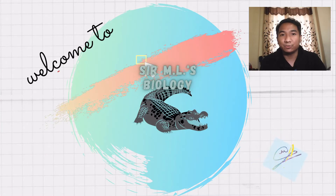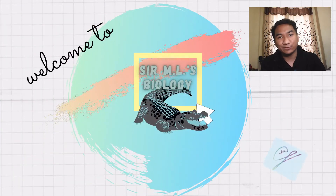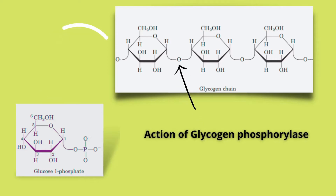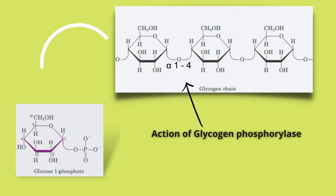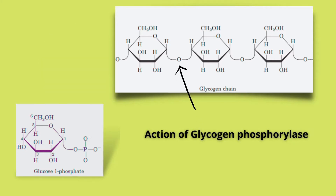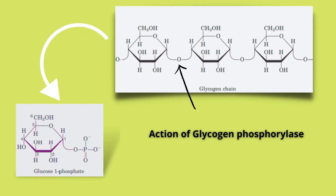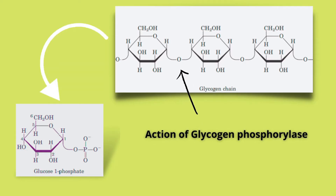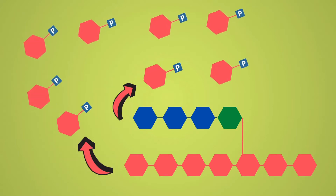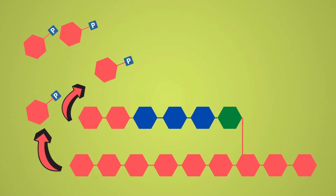Let's get right into it. In the first step of glycogenolysis, the enzyme glycogen phosphorylase catalyzes the reaction in which an alpha 1,4 glycosidic linkage between two glucose residues is attacked by an inorganic phosphate, or Pi, removing the terminal glucose residue as glucose-1-phosphate.